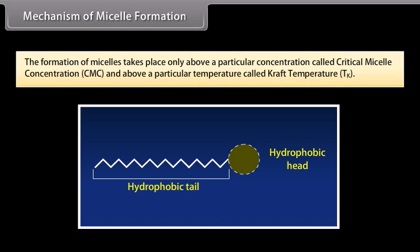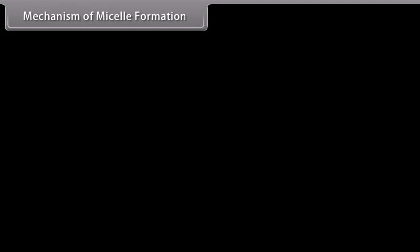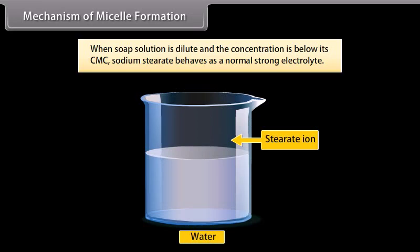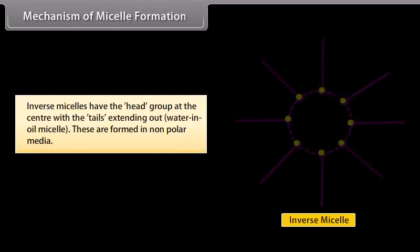Micelle formation takes place only above a particular concentration called the critical micelle concentration (CMC) and above a particular temperature called the Krafft temperature. Micelles are formed by surfactant molecules that have lyophilic as well as lyophobic ends — for example, sodium stearate. When soap solution concentration is below CMC it behaves as a normal electrolyte; above CMC the non-polar tails clump into the center of a ball-like structure (micelle), with polar heads on the outside interacting with water — this is a normal phase micelle. Inverse micelles have head groups at the center with tails extending out, formed in non-polar media.